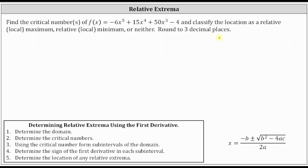Before we determine the critical numbers, we should always find the domain of the function because the critical numbers must be in the domain. Here, because we have a polynomial function, the domain is all real numbers, meaning there are no restrictions on the domain. The domain using interval notation is the open interval from negative infinity to positive infinity.